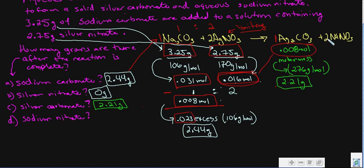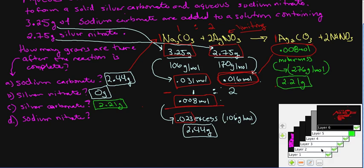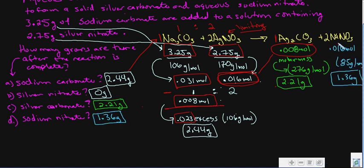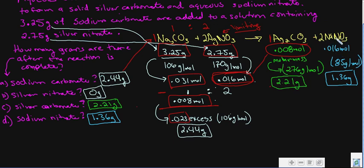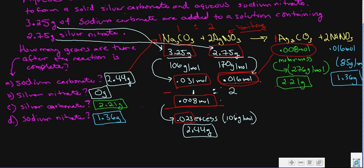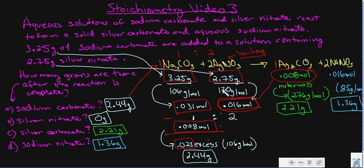For sodium nitrate, the ratio of AgNO₃ to NaNO₃ in the balanced equation is 2:2, meaning equal moles — so NaNO₃ also has 0.016 moles. The molar mass of NaNO₃ (one sodium, one nitrogen, three oxygens) is 85 g/mol. Multiplying 0.016 × 85 gives 1.36 grams of sodium nitrate. So by knowing just the starting masses, we determined exactly what remains of reactants and what amounts of products are formed.